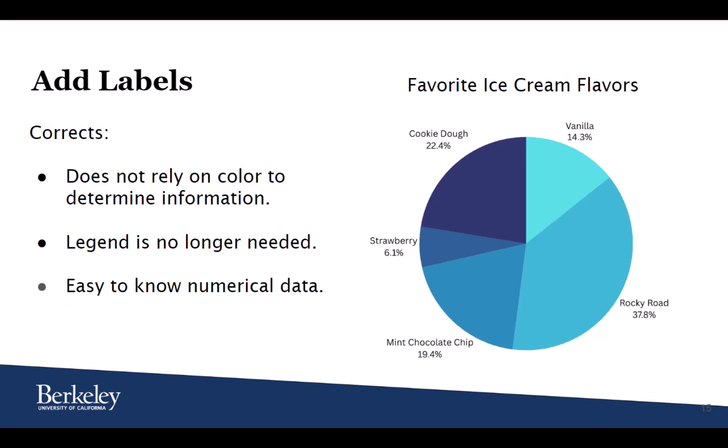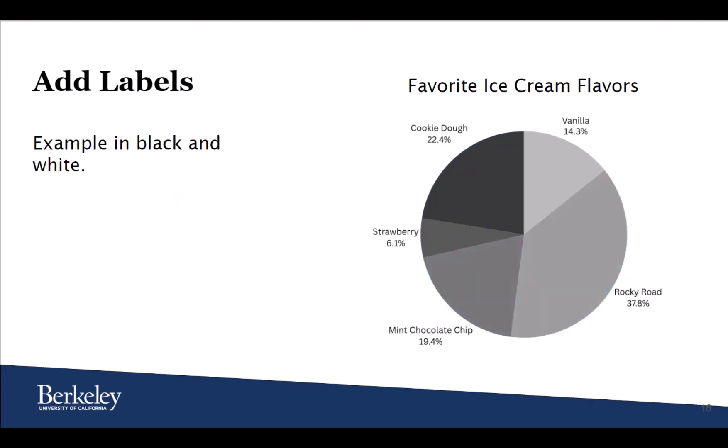By adding labels, we no longer are relying on color, a legend isn't necessary, and it is much easier to understand numerical data in relation to the data tracked. And again, we have the same graphic in black and white, and we can understand the context of the data without the help of color.